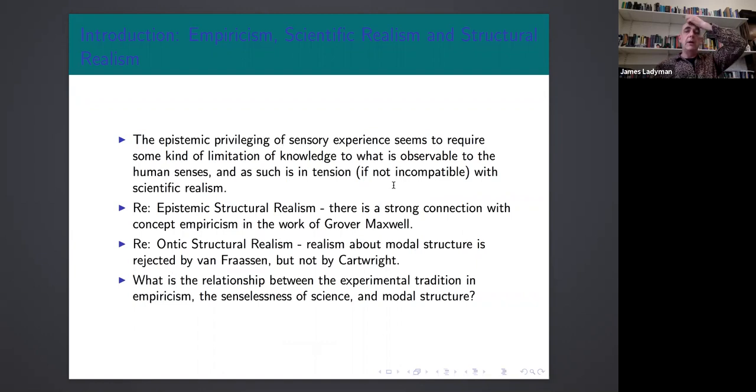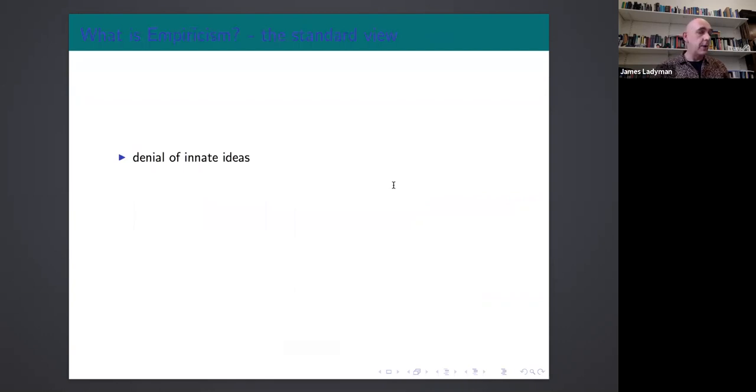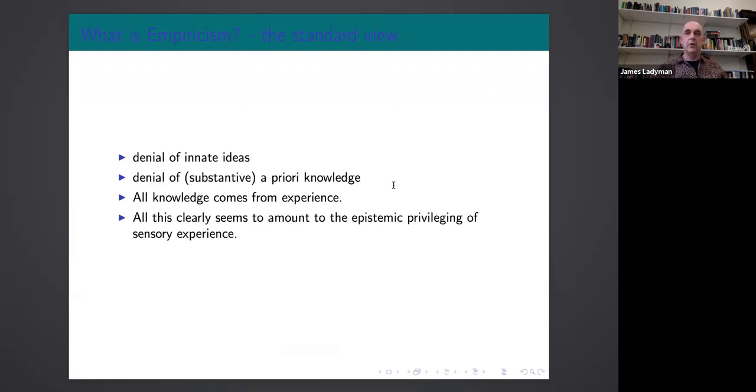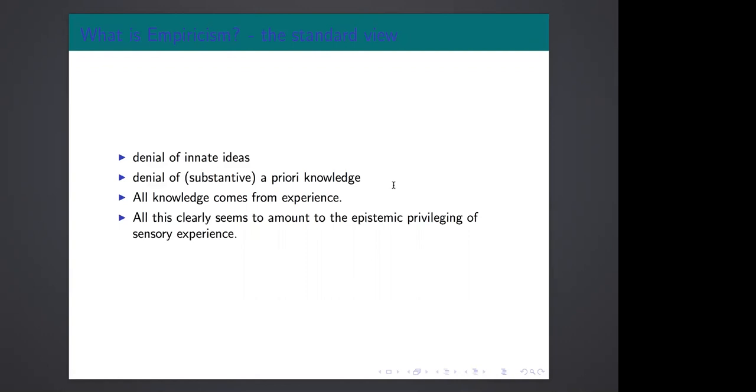So what's the relationship between the experimental tradition in empiricism, the senselessness of science—which I'll say what I mean by that, but basically it's the fact that science doesn't seem to give a special role to human senses—and modal structure? That's what I'll be trying to explain. So let's just talk about what empiricism standardly is: denial of innate ideas, denial of substantive a priori knowledge, all knowledge comes from experience. Well just to sort of get the paradox on the table, right? That surely looks like the epistemic privileging of human sensory experience, doesn't it?